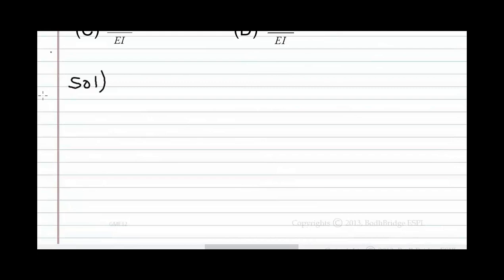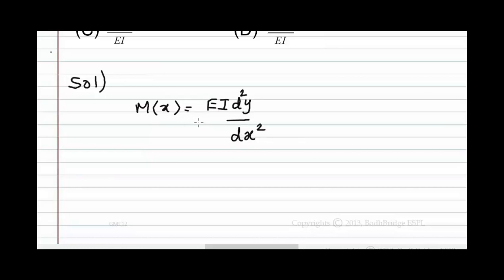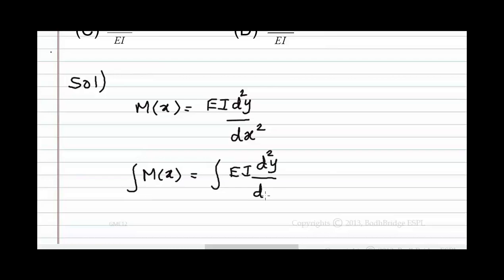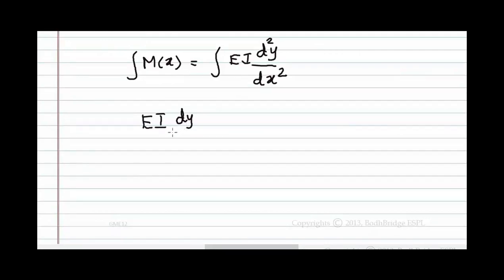The solution: we know the moment in the beam — M(x) is equal to EI d²y/dx², where E is the material's modulus of elasticity and I is the beam's moment of inertia about the neutral axis. By integrating the above equation we get EI dy/dx = Mx + C₁, where C₁ is the constant.